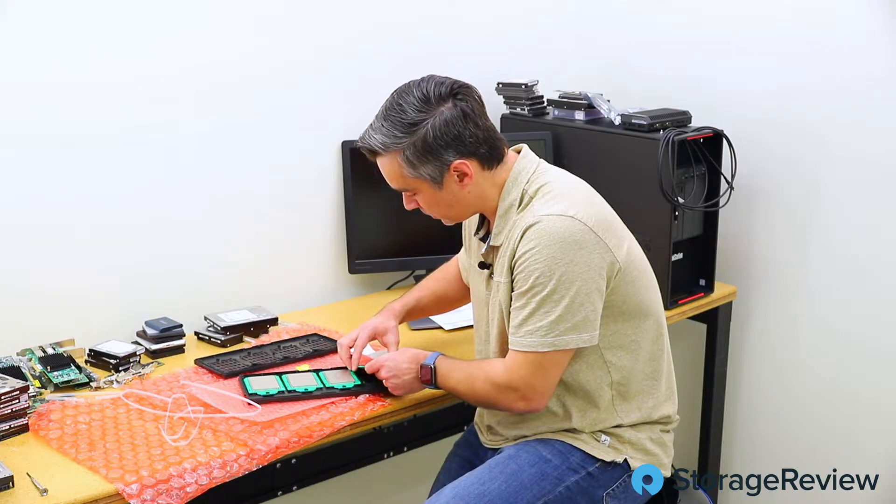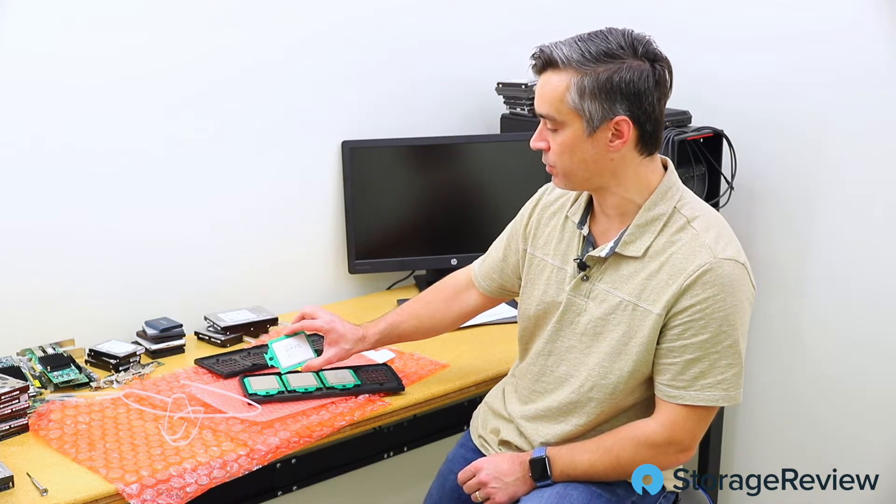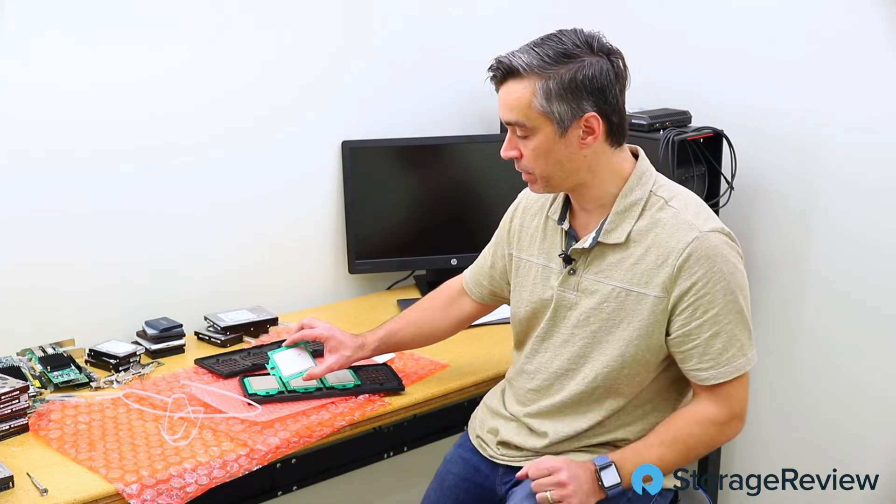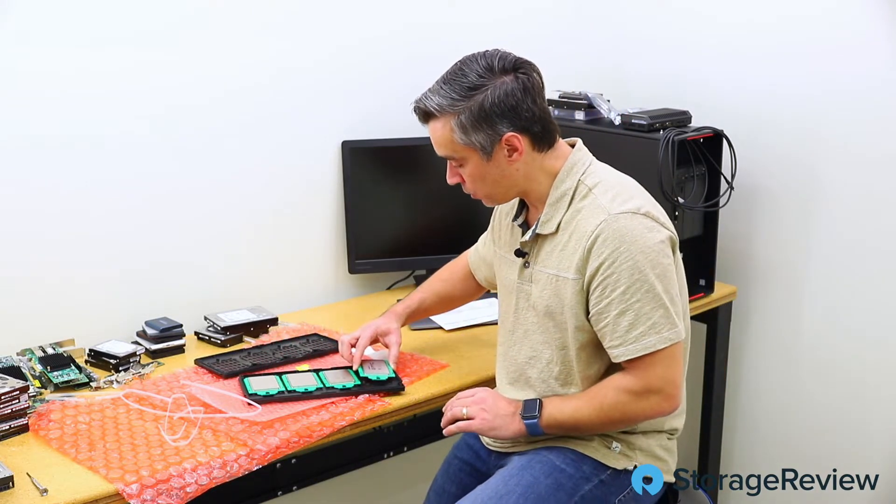And then the last guy in this tray is a 7702. And we got some 7702 at launch, but we just had one. So this one will be able to pair up with that one and let us put it in dual processor systems. So that's all cool.